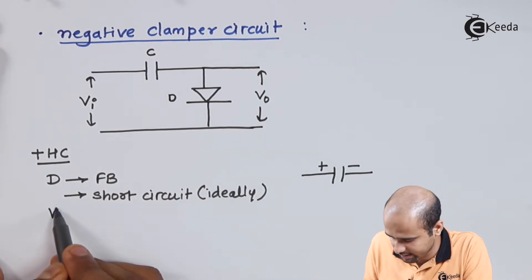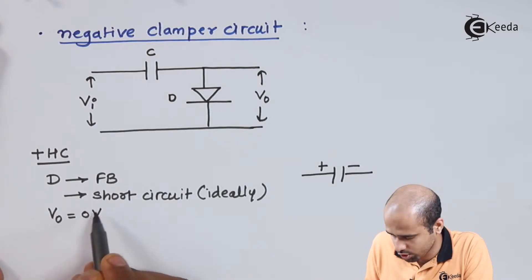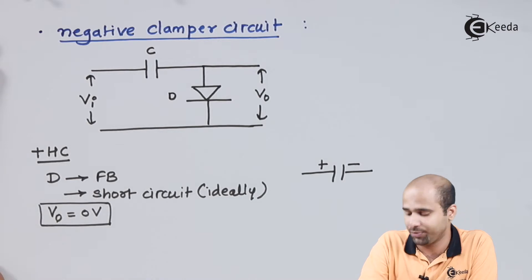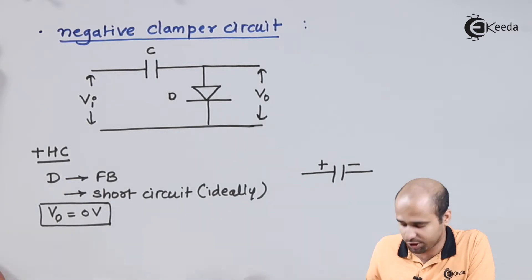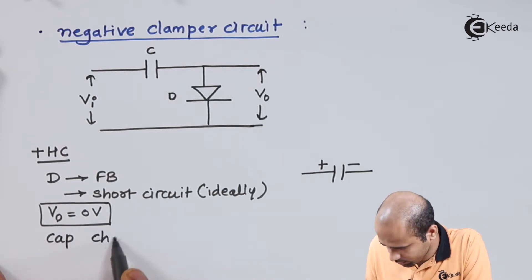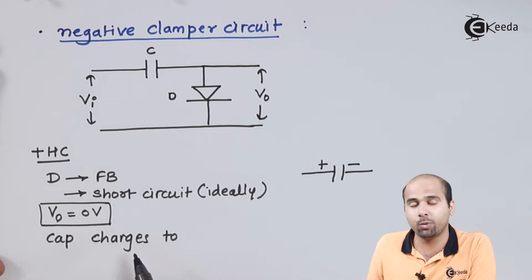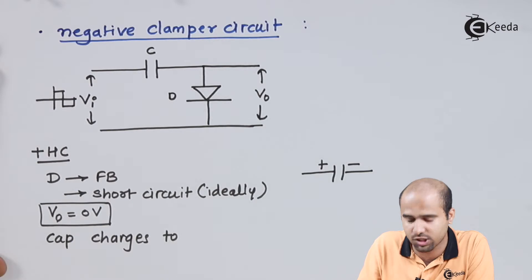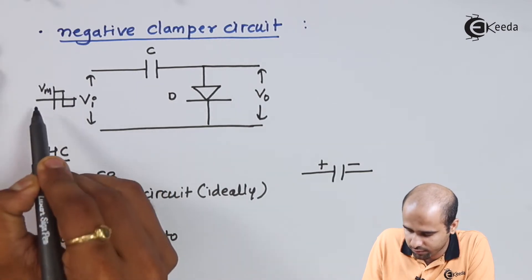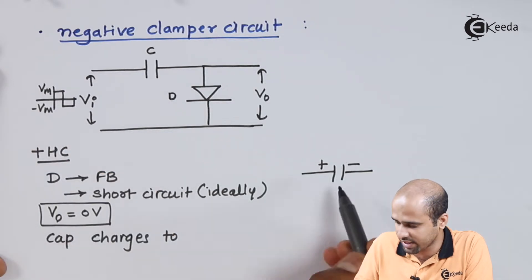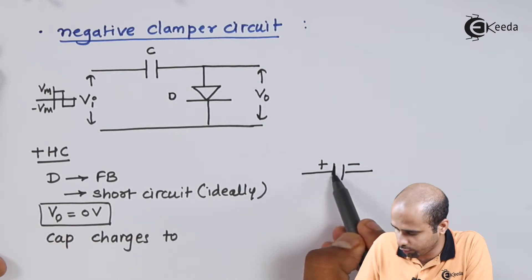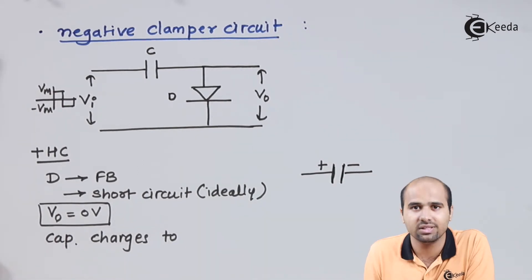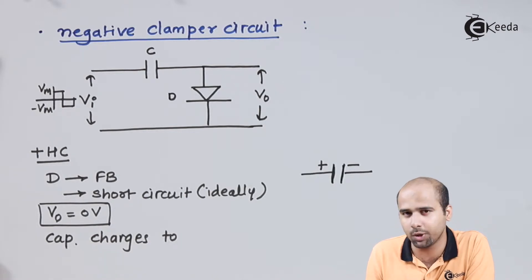As the diode D is forward biased, ideally it is short circuited. So the value of Vo is equal to zero volts for the positive half cycle. At the same time, the capacitor is charging — the capacitor will charge up to the maximum value of the input signal. Let us consider the input signal is a square wave with value Vm and minus Vm. So the capacitor charges to Vm, the maximum positive value.